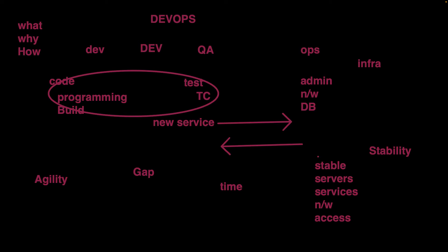How to overcome this gap? There is no proper understanding between them, no proper collaboration or communication. That's where DevOps came in. DevOps came in to eliminate the gap between the teams. One of the reasons DevOps came in is to eliminate this gap — though it's not the only reason.